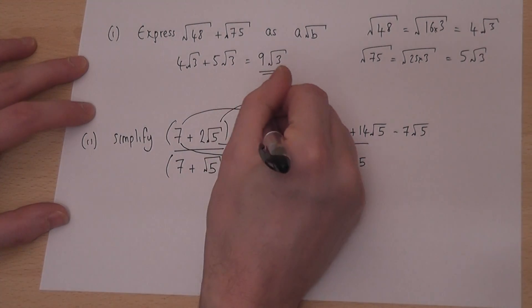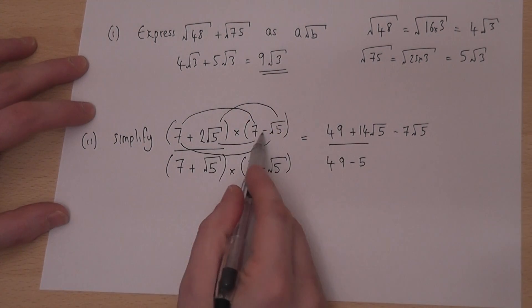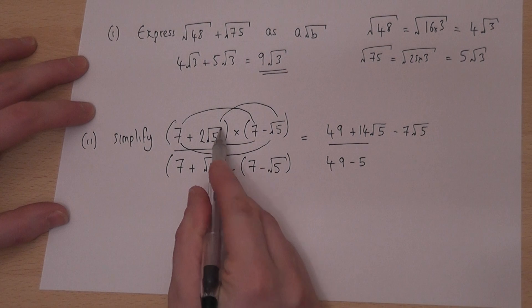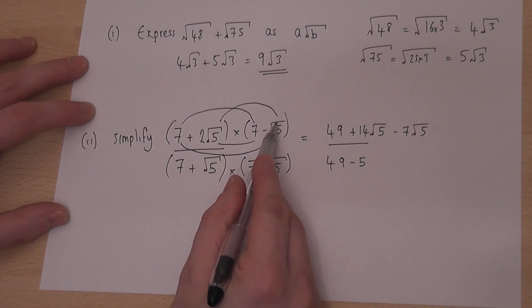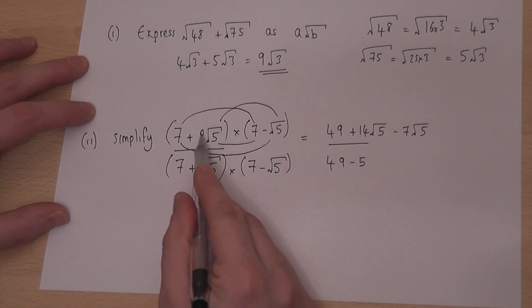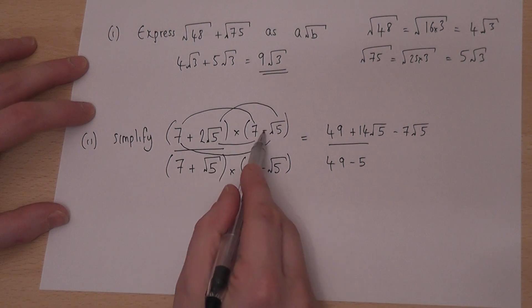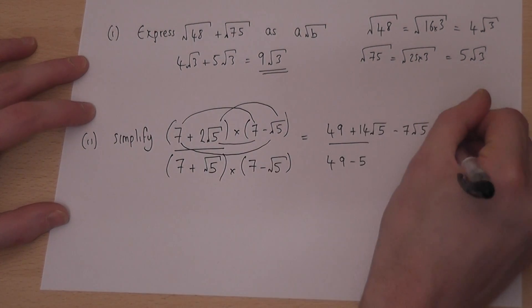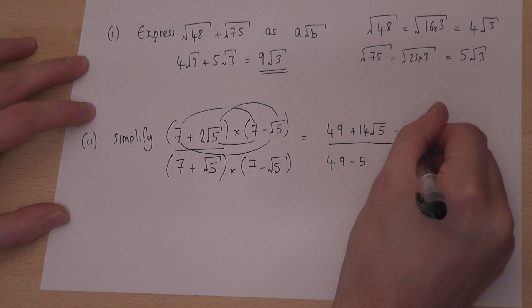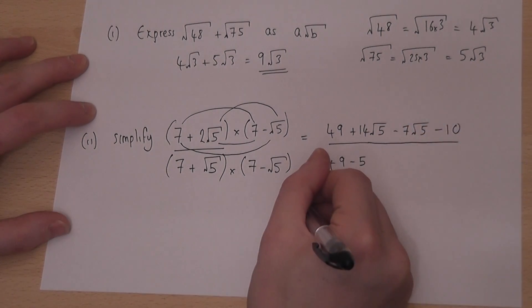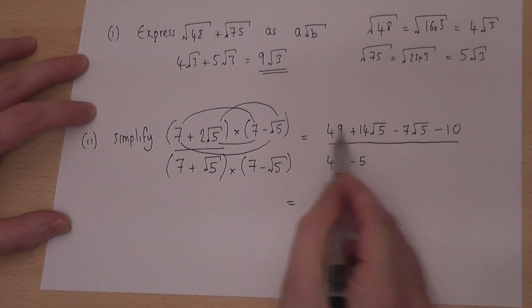And finally, 2 root 5 times minus root 5. Well, root 5 times root 5 is 5, 2 times 5 is 10. There's a minus there so it's just minus 10.